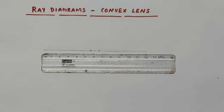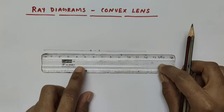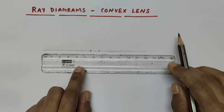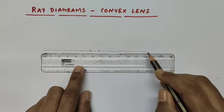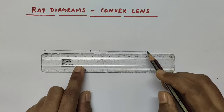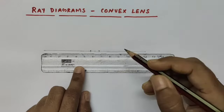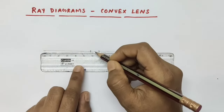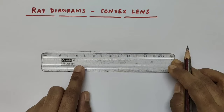So first of all, let us draw a convex lens. For that, first you need to draw a straight line of any length. Here I have already drawn a straight line of length 12 cm. Then mark the midpoint of the straight line — that will be almost 6 cm.